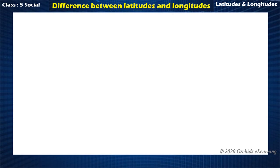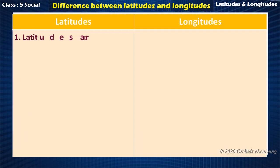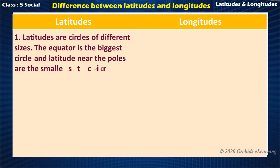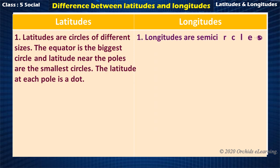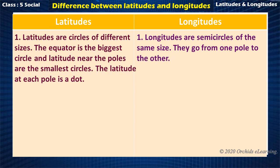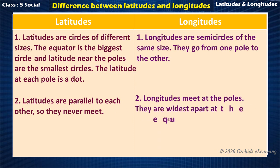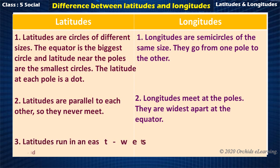Difference between latitudes and longitudes. Latitudes are circles of different sizes — the equator is the biggest circle and the latitude near the poles is the smallest circle, eventually becoming just a dot at each pole. Longitudes are semi-circles of the same size, going from one pole to the other. Latitudes are parallel to each other, so they never meet, whereas longitudes meet at the poles and are widest apart at the equator. Latitudes run in an east-west direction, while longitudes run in the north-south direction.